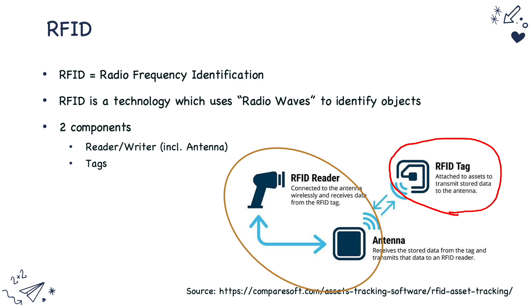For example, in the case of an ID card, it contains the identity information. In the case of payment devices, it consists of payment instrument related information. This RFID tag consists of a chip and also an antenna, where the chip stores the information and the antenna transmits that information.